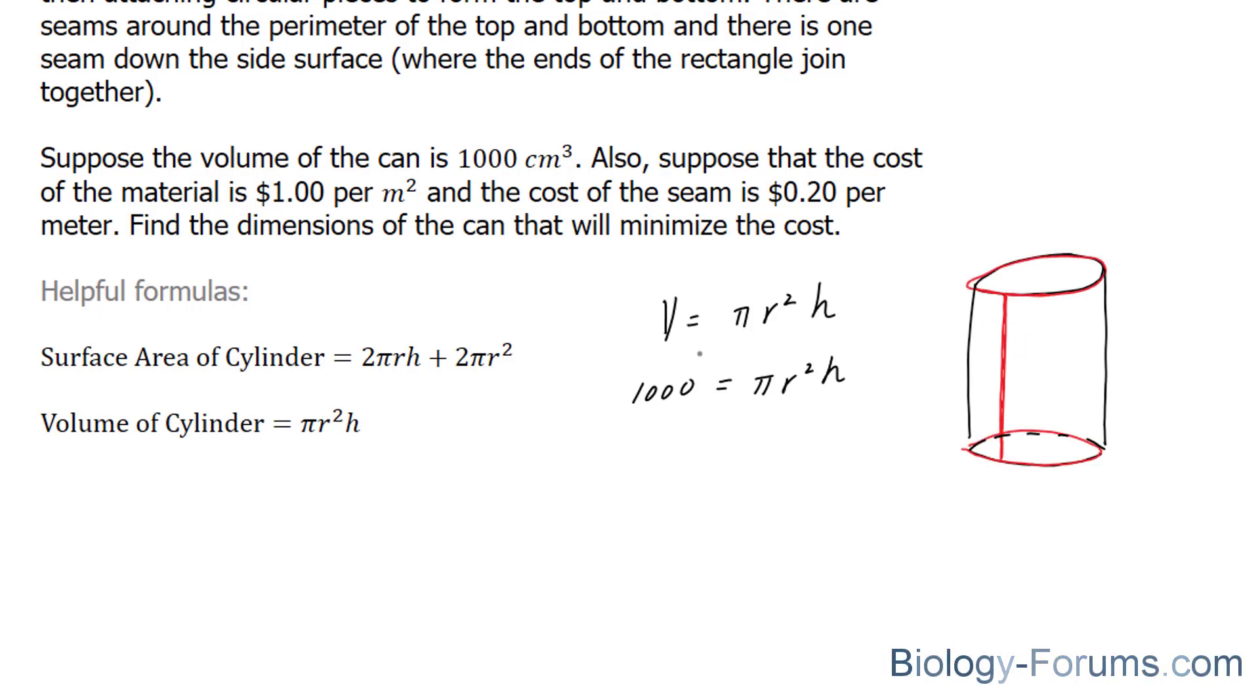Next, we know that the cost is equal to the surface area times $1, plus there's also a cost for the seams, and that cost is 20 cents times h plus 2 times the perimeter of the circle. And if you recall, the perimeter of a circle is 2 pi r.